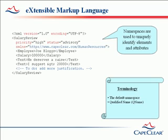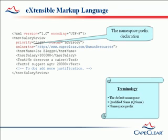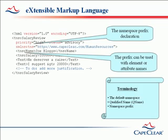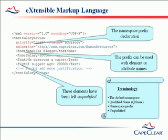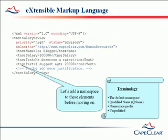You might need to use more than one namespace within a single document. You can do this by setting the default namespace on each element. Alternatively, there is another syntax that allows namespace prefixes to be declared. Here we see the prefix TNS being declared. These do not set a default namespace — instead, the prefix needs to be used as part of the element name within the start tag and end tags. Namespace prefixes may also be used to qualify attribute names. Here you can see that the prefix has not been applied to the elements called 'text'. As there is no default namespace declared, we refer to these elements as being unqualified.